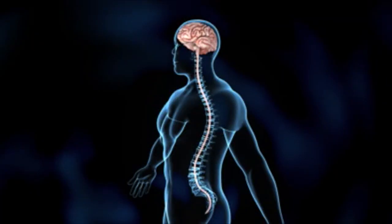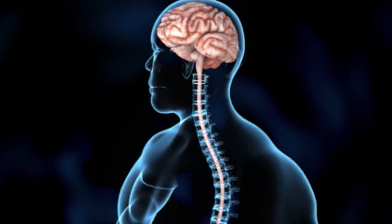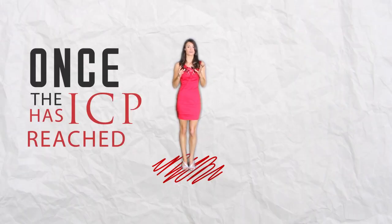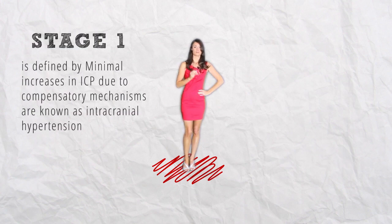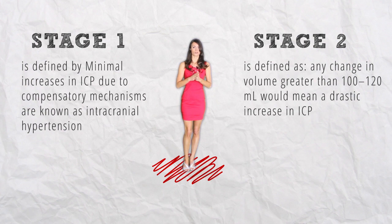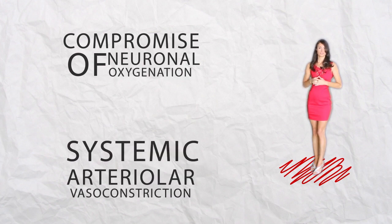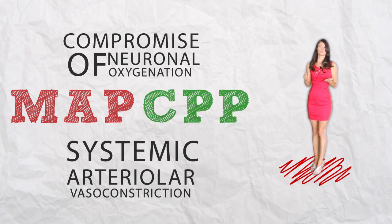Pathophysiology: Small increases in brain volume do not lead to immediate increases in intracranial pressure, because of the ability of the cerebral spinal fluid to be displaced into the spinal canal. However, once the intracranial pressure has reached around 25 millimeters of mercury, small increases in brain volume can lead to marked elevations in intracranial pressure. There are three stages. Stage 1 is defined by minimal increase in intracranial pressure due to compensatory mechanisms, and is known as intracranial hypertension. Stage 2 is defined by any change in volume greater than 100 to 120 milliliters, which would mean a drastic change in intracranial pressure. Characteristics of stage 2 include a compromise of neural oxygenation and systemic vasoconstriction to increase the mean arterial pressure (MAP) and the cerebral perfusion pressure (CPP), which is the pressure of the blood flowing through the brain.